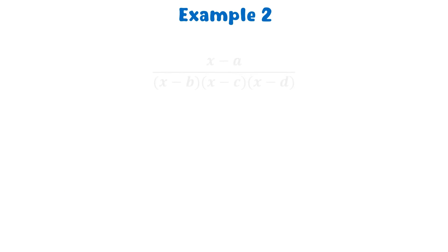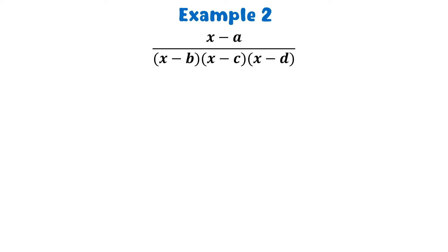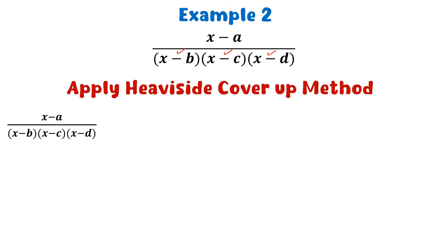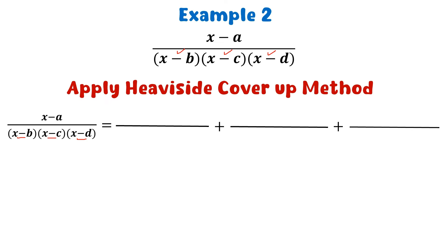Example 2: we take a proper rational fraction of this form. We note that this denominator has three non-repeated linear factors. We apply the Heaviside cover-up method to this fraction. Since there are three non-repeated linear factors, this fraction will be resolved into three partial fractions.